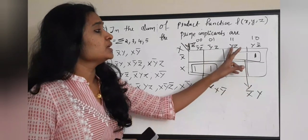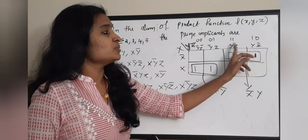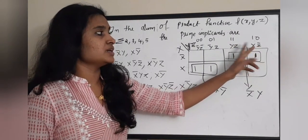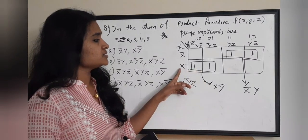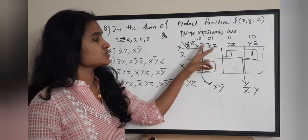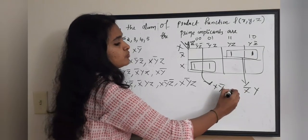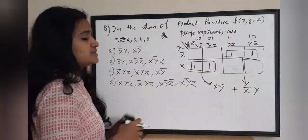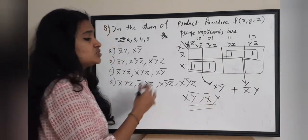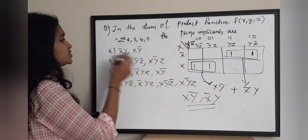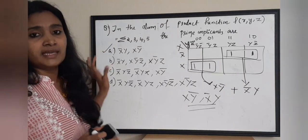Grouping the ones: clubbing two ones gives a product term. Here, y·z and y·z-bar share y as common and x-bar as common, so this group gives x-bar·y. Clubbing the other two ones, x·y-bar·z-bar and x·y-bar·z share y-bar as common and x as common, giving x·y-bar. So the prime implicants are x·y-bar and x-bar·y. From the options, the correct answer is option A.